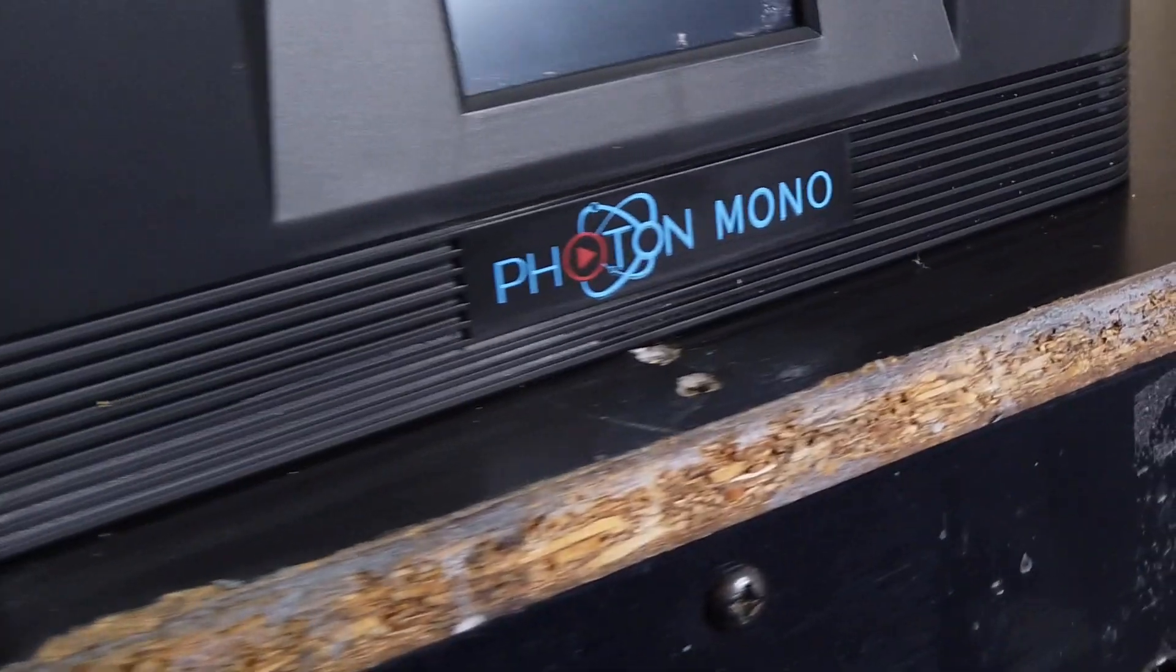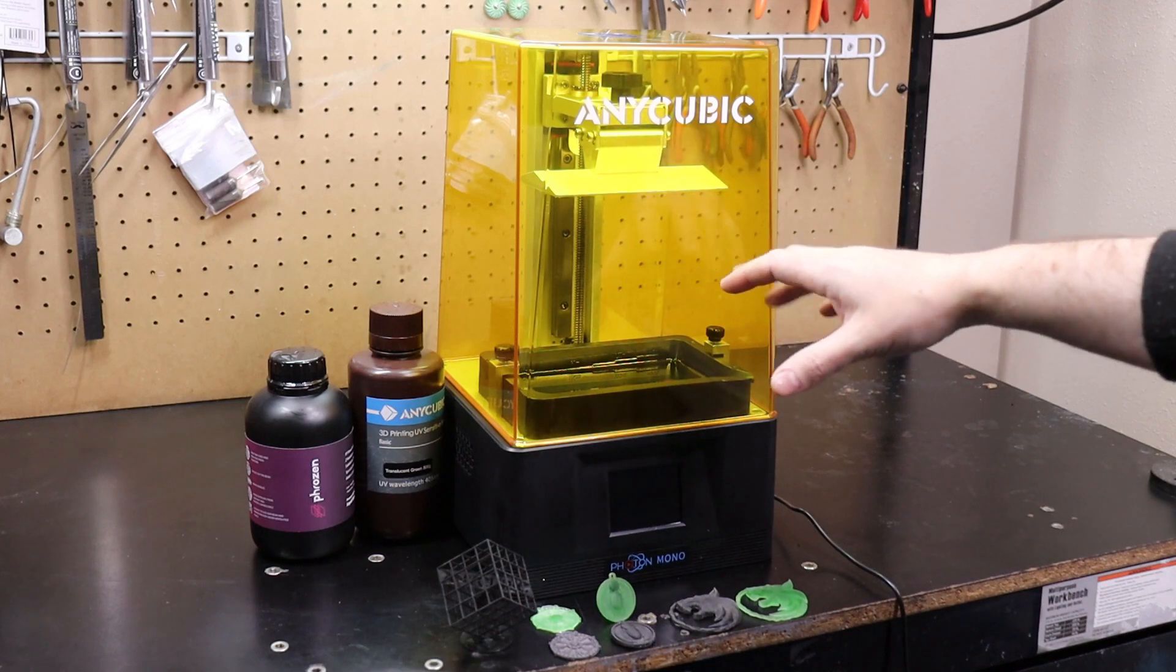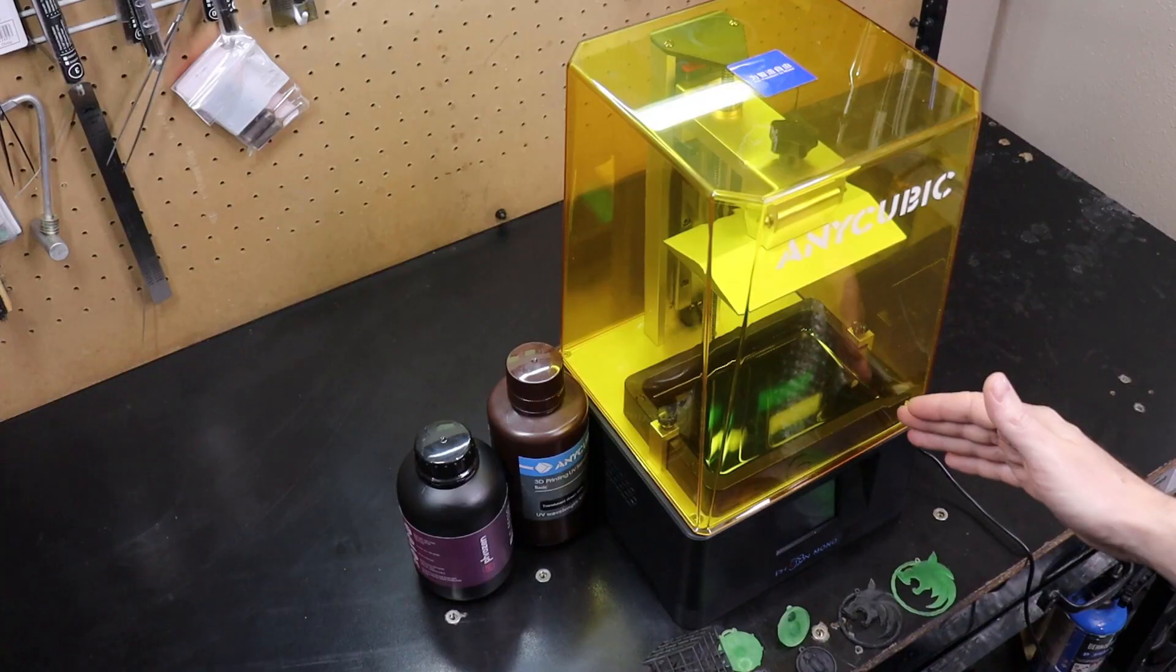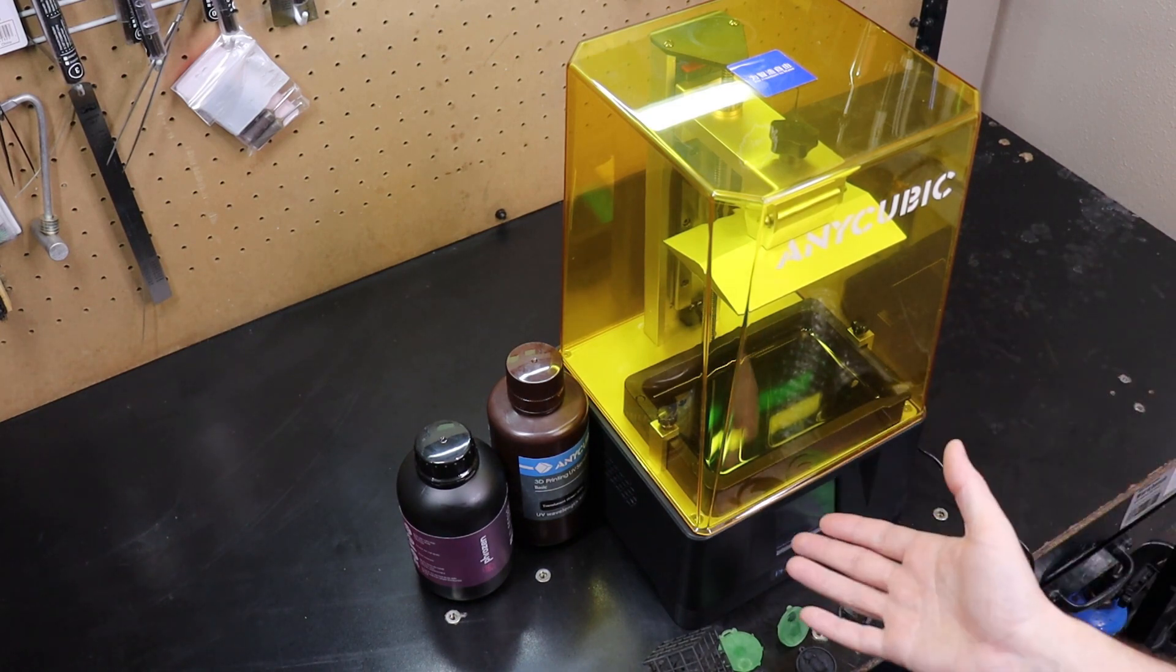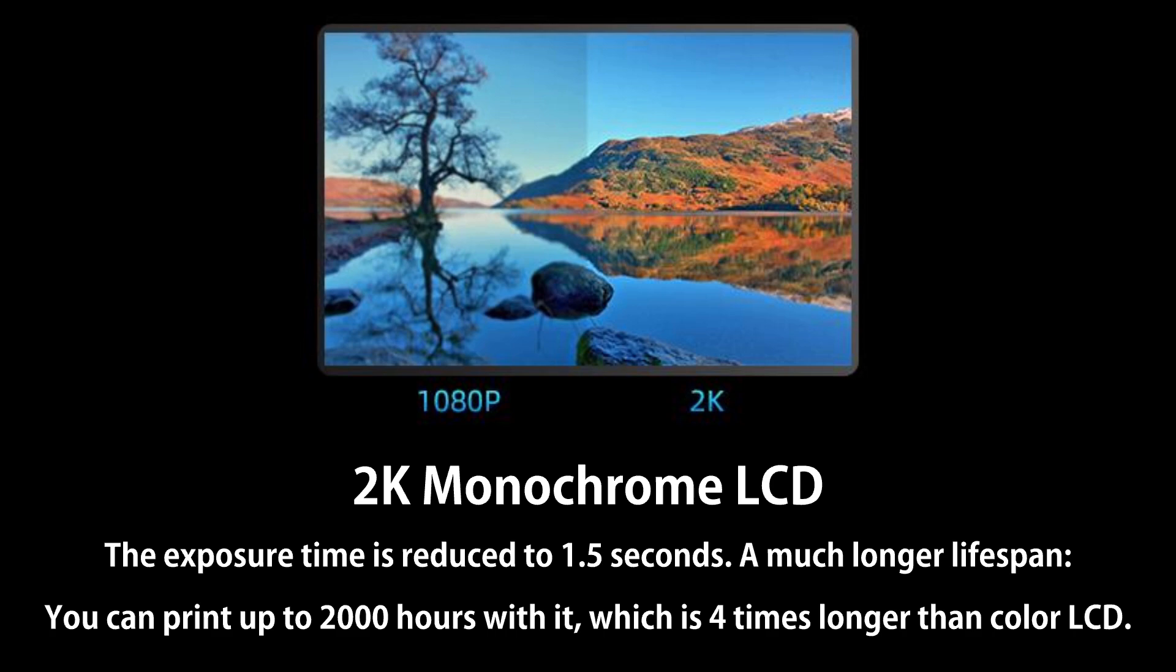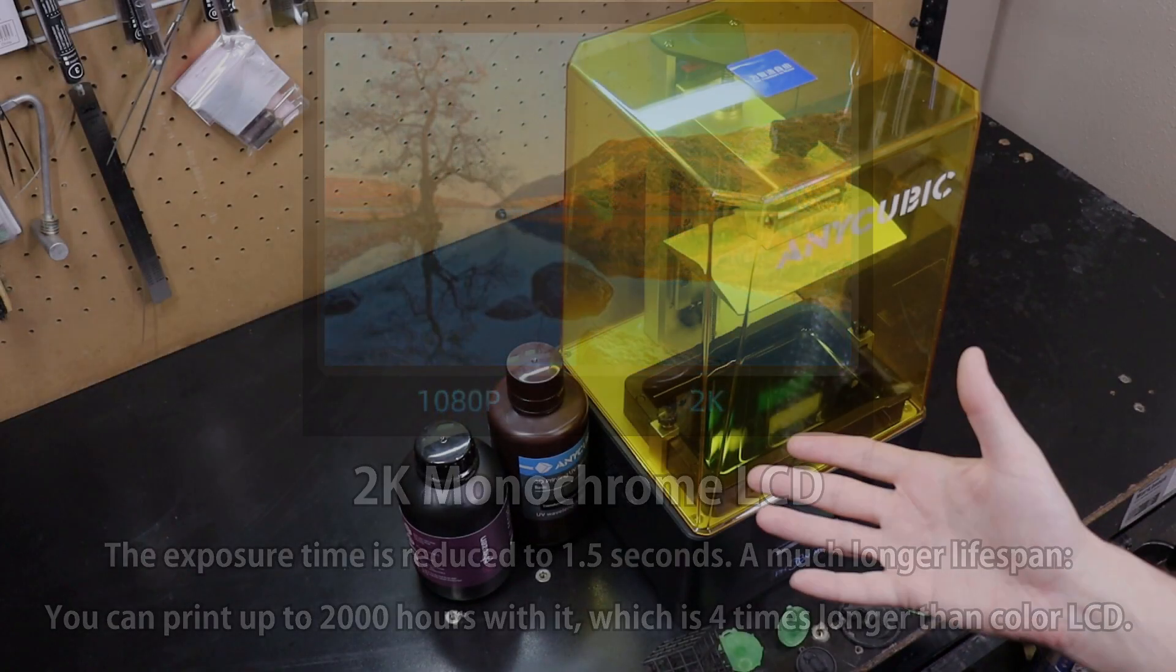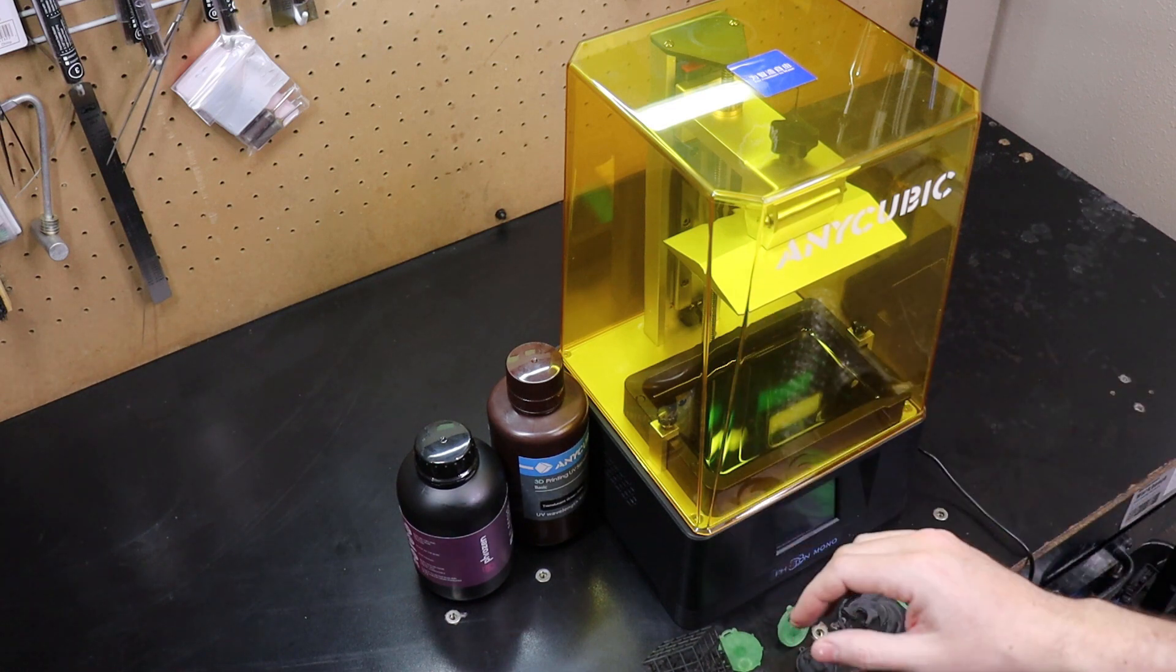Anycubic was nice enough to send me one of their Photon Mono resin printers and I'm going to go over it and show you what it can do and how well it can print. The mono part isn't just the name of the printer, it is also what kind of screen it has. It has a monochrome screen so it turns on either black or clear, just on or off, which allows you to print faster because it allows more UV light to go through it.